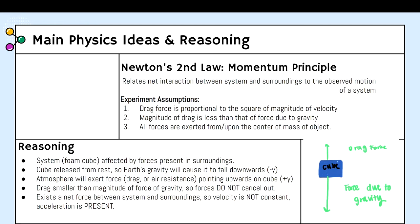In this case, the system will be a foam cube and it will be affected by both drag and gravity. The cube is released from rest at a point above ground, and Earth's gravity will cause it to fall downwards in a negative y direction, but also the atmosphere will exert a force which is drag which points upwards on the cube in a positive y direction.